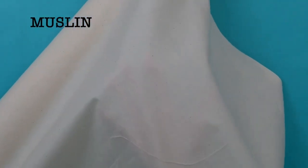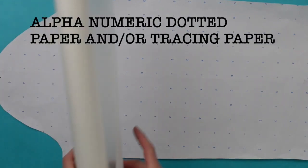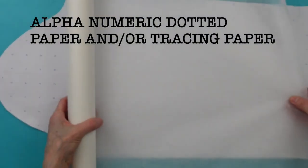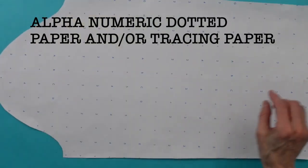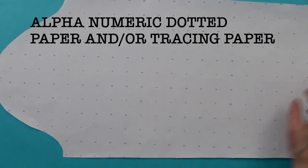You need a tightly woven muslin, at least three yards. You need AccuDot paper and your tracing paper. Tracing paper is wonderful because you can see through it. Dot paper is wonderful because you have one inch squares.